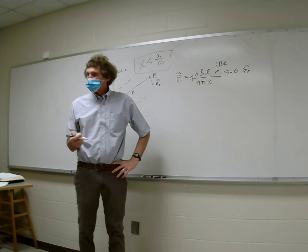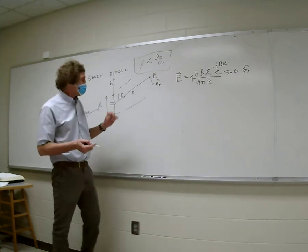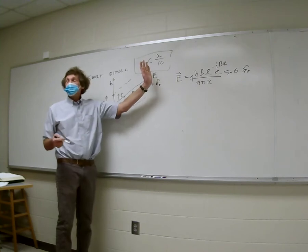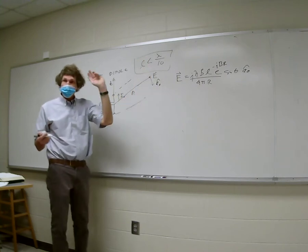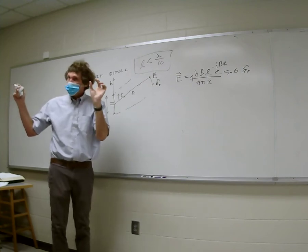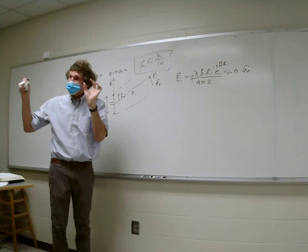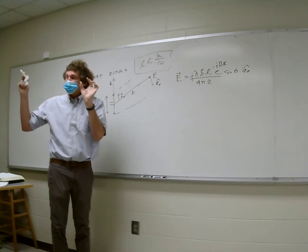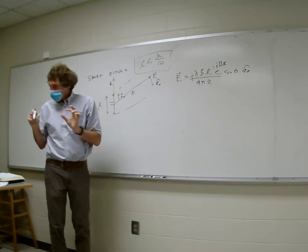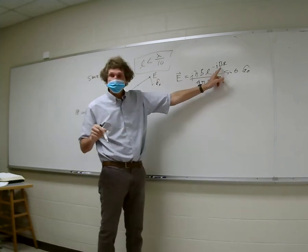Why does it have e^{-jβr}? The speed-of-light time delay — this is an instantaneous phasor representation. If we took a time delay, we'd take t minus r/c, and that times ω gives ω·t minus ω·r/c. Omega over c is β, so r/c times ω is β·r. That's the reason: this is a phase delay.